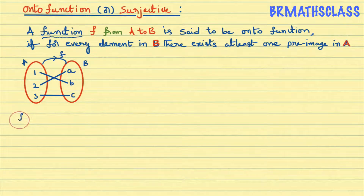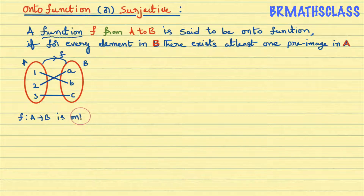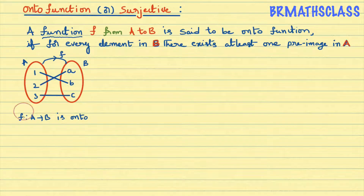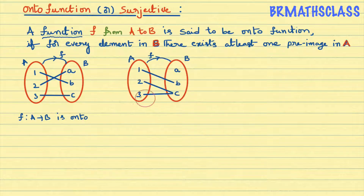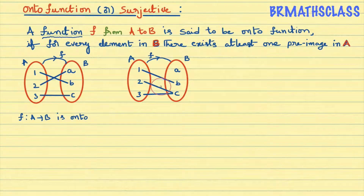Here, the notation f from A to B itself indicates it is a function. f from A to B is onto, because for every element in the codomain set B, there exists at least one preimage in set A. Now we will try to understand this with one more example. Observe this second example, f from A to B. First we will check whether it is a function or not, then check whether it is onto.